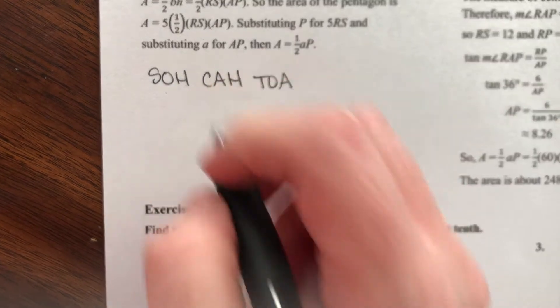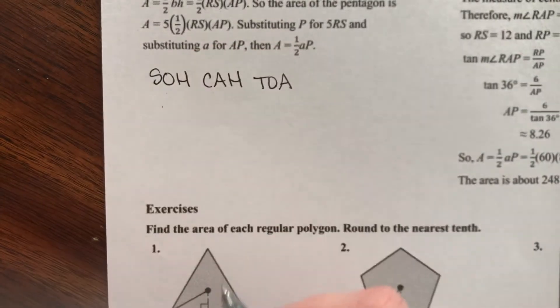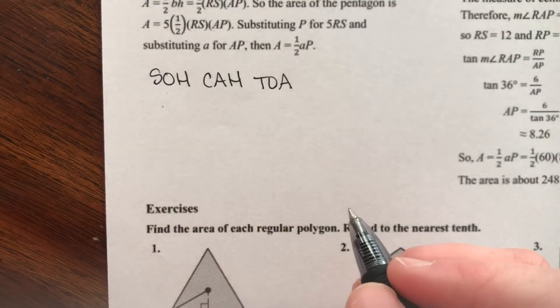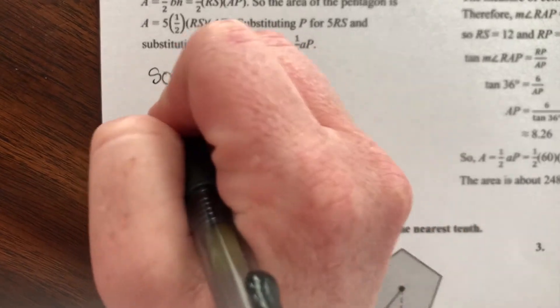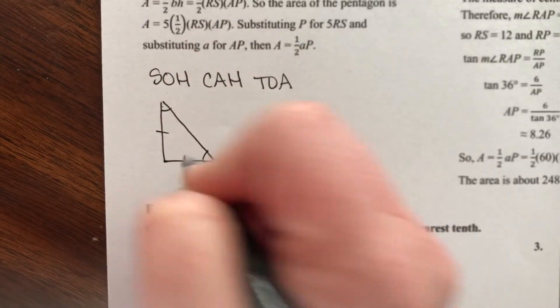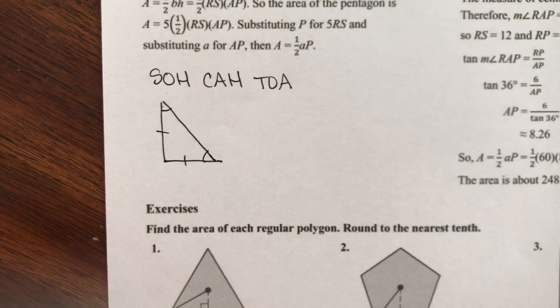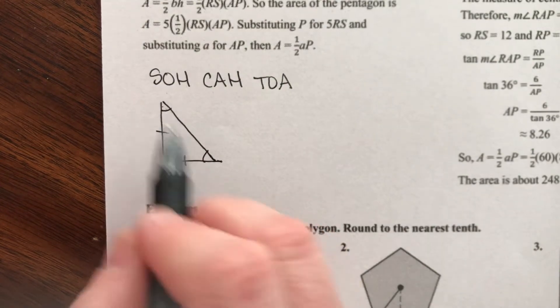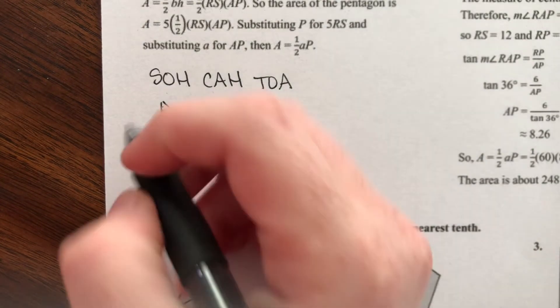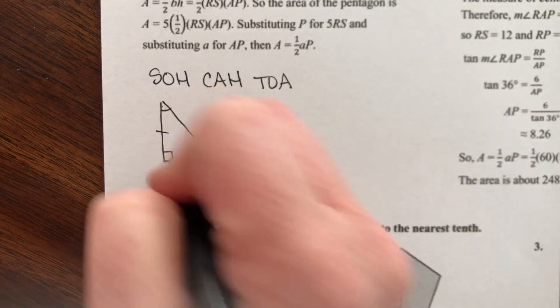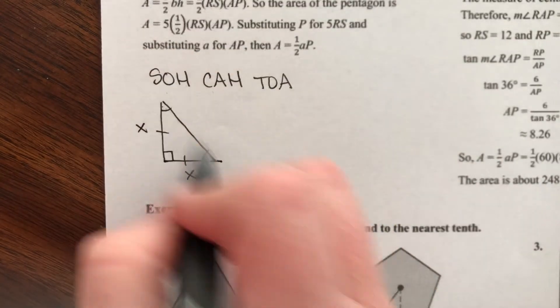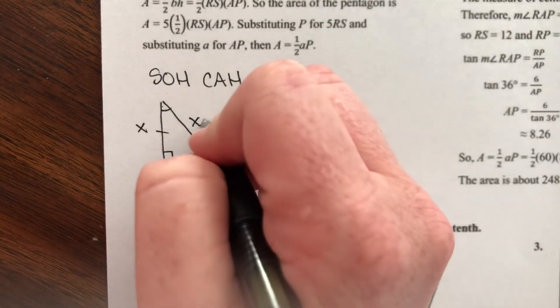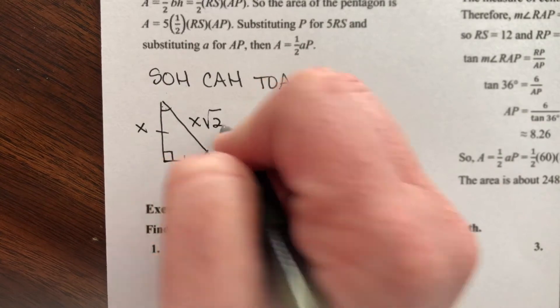SOHCAHTOA is our shortcut: Sine equals the opposite side over the hypotenuse. Cosine is the adjacent side over the hypotenuse. Tangent is the opposite side over the adjacent. Also recall special case right triangles: a 45-45-90 has equal leg lengths and equal 45-degree angles. The two legs are the same length, and the hypotenuse is the leg length times the square root of 2.